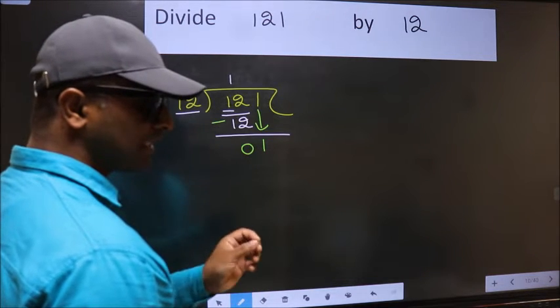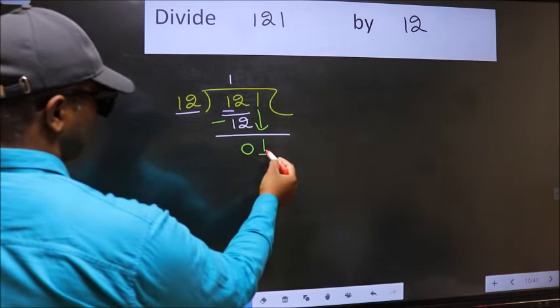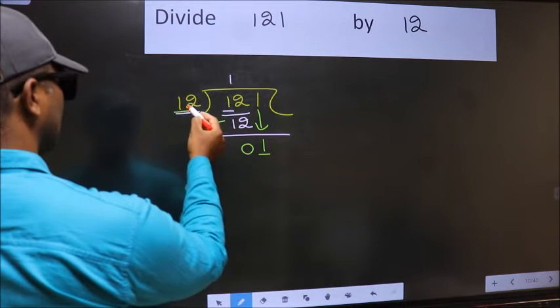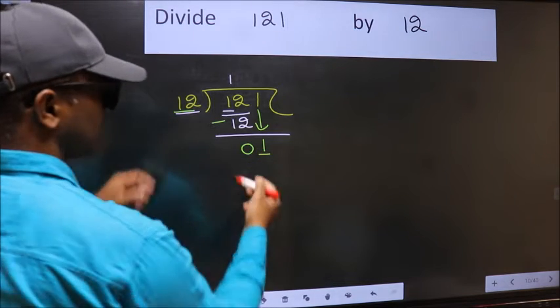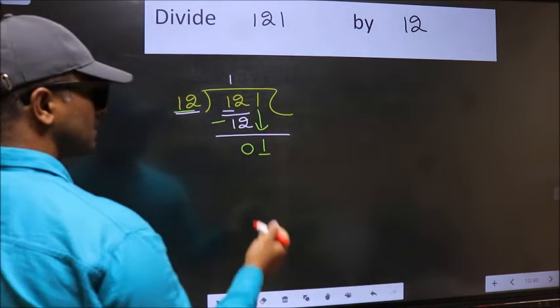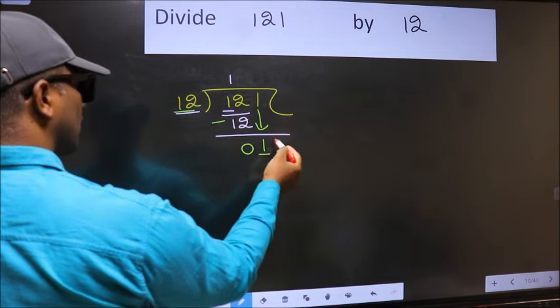And the mistake is this: here we have 1 and here 12. 1 is smaller than 12, so what many do is they directly put dot, take 0.